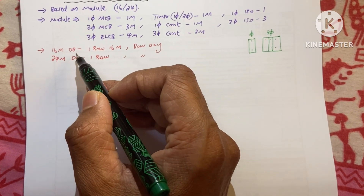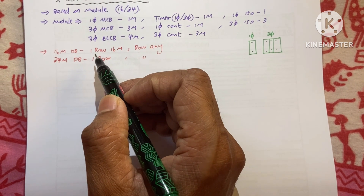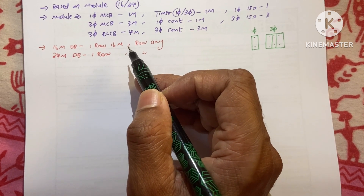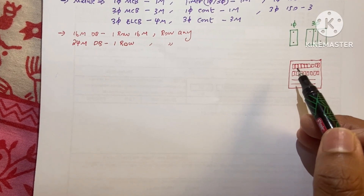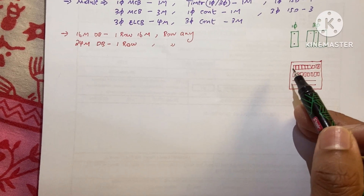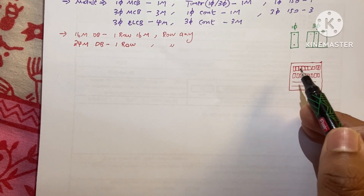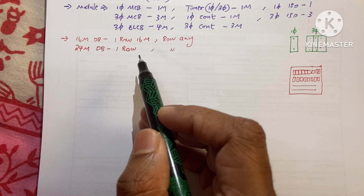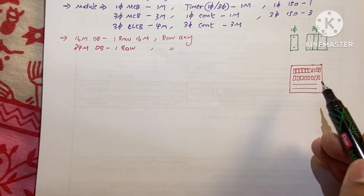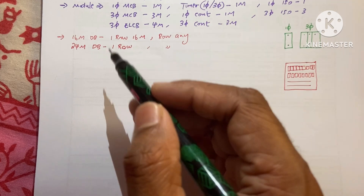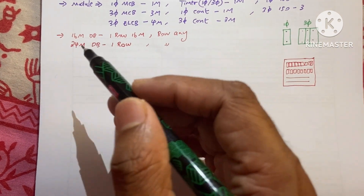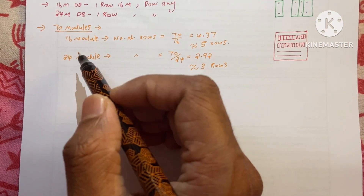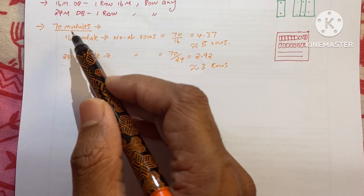Inside a DB — distribution box — a 16-module DB means that in one row there are 16 number of modules. Looking at the diagram of a DB, if it is a 16-module DB, one row contains 16 modules. For a 24-module DB, one row contains 24 modules. Both 16-module and 24-module DBs can have between 2 to 6 rows.